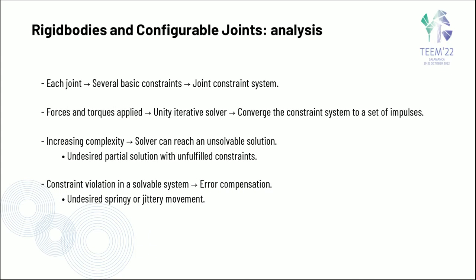Further testing revealed that this approach with Unity components is not fully stable. Unity's iterative solver converges the joint constraint system to a set of impulses given the forces and torques applied. However, increasing complexity with the number of joints can lead to an unsolvable state, where the solver achieves a partial solution with unfulfilled constraints. This led during testing to gaps in the joints or rotations beyond the defined limits. Furthermore, in solvable solutions with constraint violations, the error compensation applied leads to ghost movement of the joints.